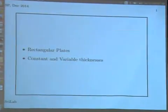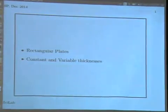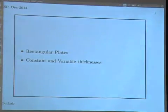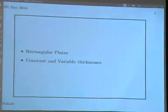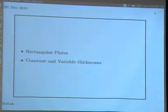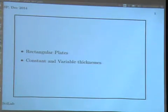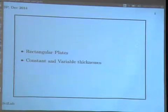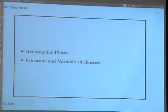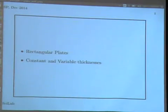We are basically looking at rectangular plates with both constant and variable thickness. A plate is generally defined as something where the thickness is very small compared to the other dimensions, and it is usually flat. Variable thickness means it will not be exactly flat. For example, an aircraft wing can be considered to be like a plate — it does not have significant curvature in the median line.